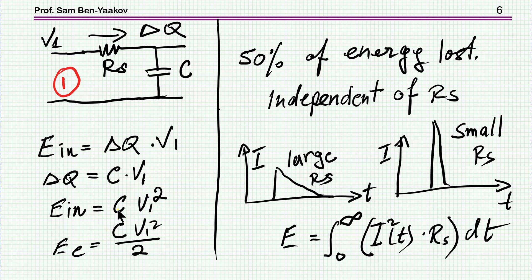Therefore the input energy here from the source, by replacing this, we find it to be C V1 squared as a whole. This is the input energy to the system. On the other hand, we know that the energy stored in a capacitor is C V² over 2. So we see that half of the energy coming out of the source got lost where? To the resistor.